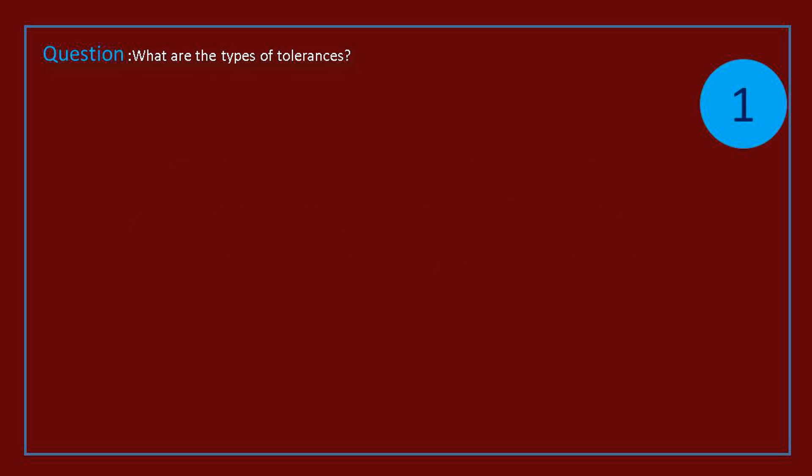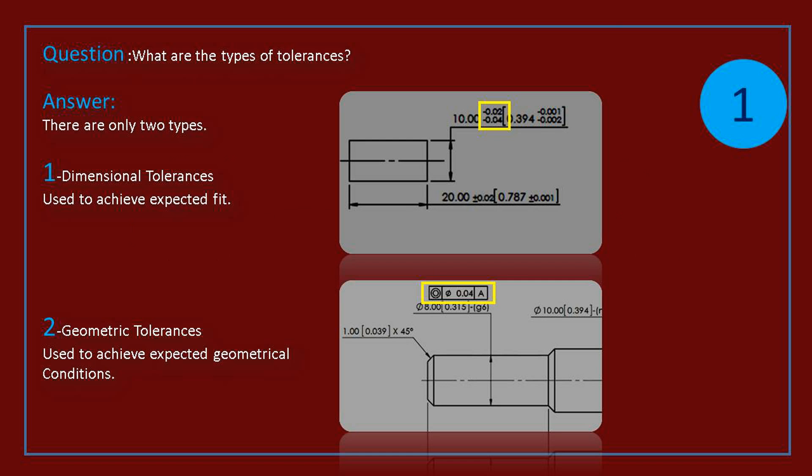Question: what are the types of tolerances? Answer: there are only two types. Dimensional tolerances, used to achieve expected fit, and geometric tolerances, used to achieve expected geometrical conditions.